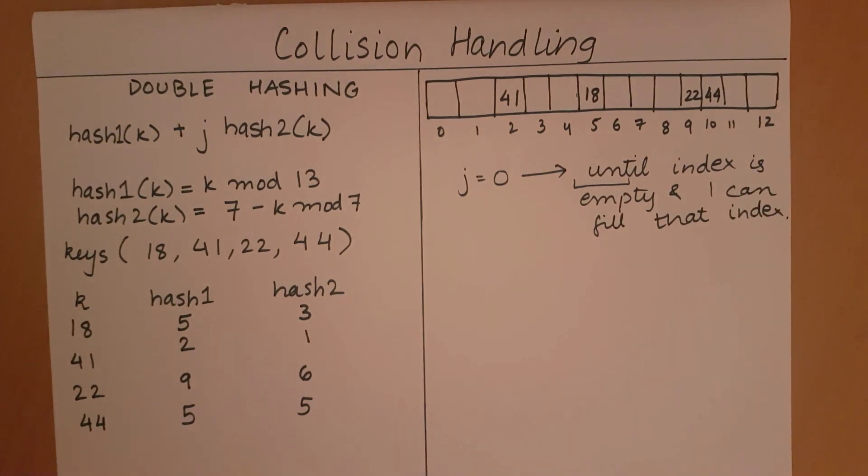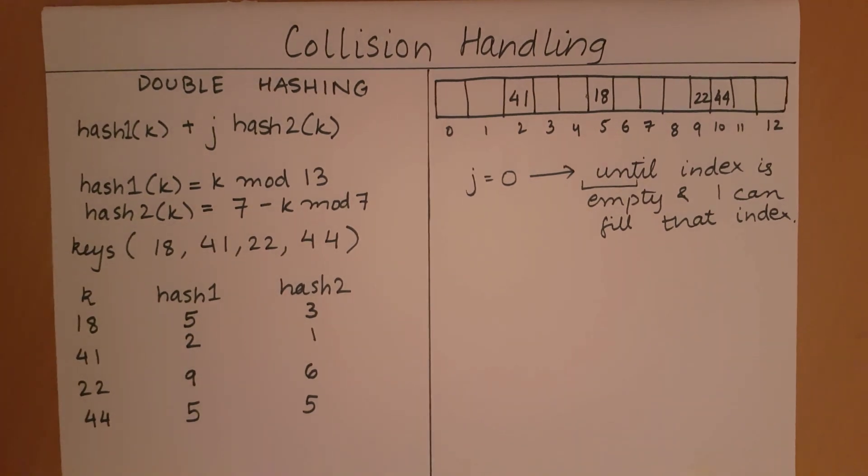This is how double hashing works. With this, we come to the end of collision handling. We had linear probing, quadratic probing, and finally double hashing. Now that we are done with collision handling, let's look at the next topic under hashing, which is called rehashing.